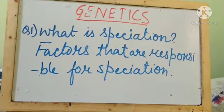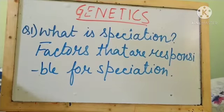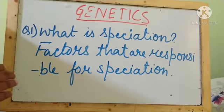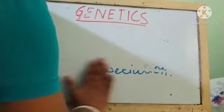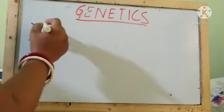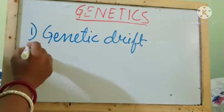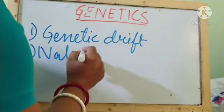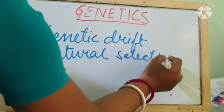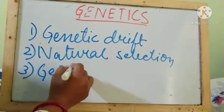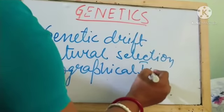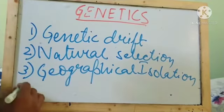The factors responsible for speciation are: genetic drift, geographical isolation, natural selection, and mutation. Speciation means formation of a new species from the existing species. The first factor is genetic drift, number two is natural selection, third is geographical isolation, and the last one is mutation.